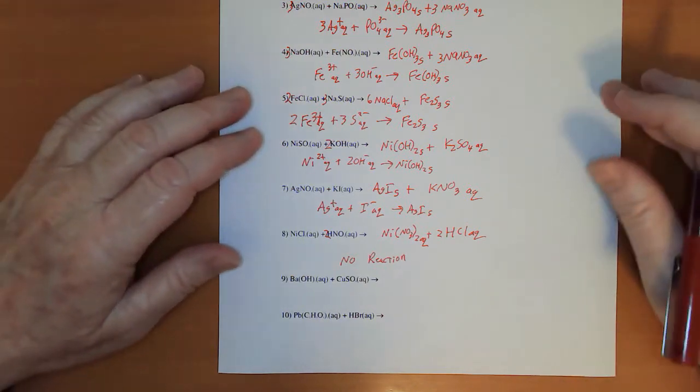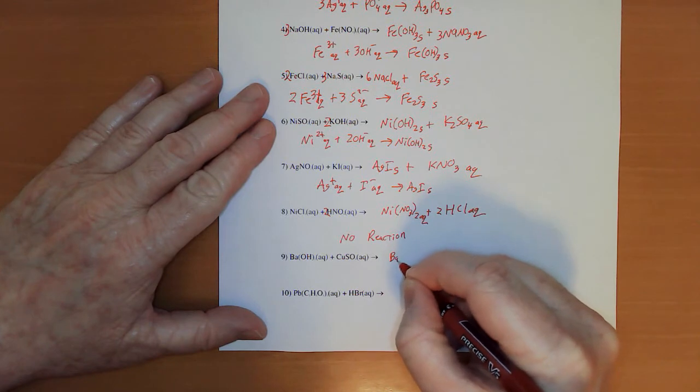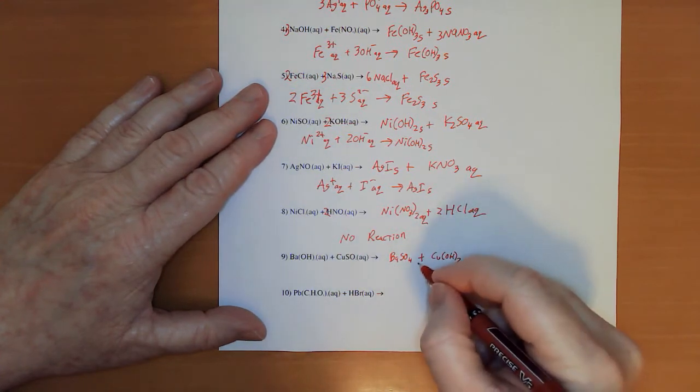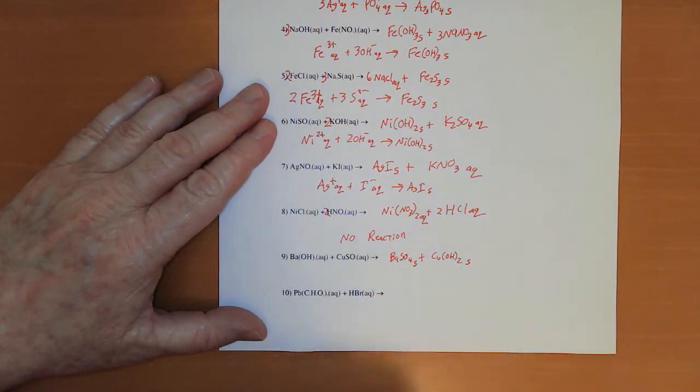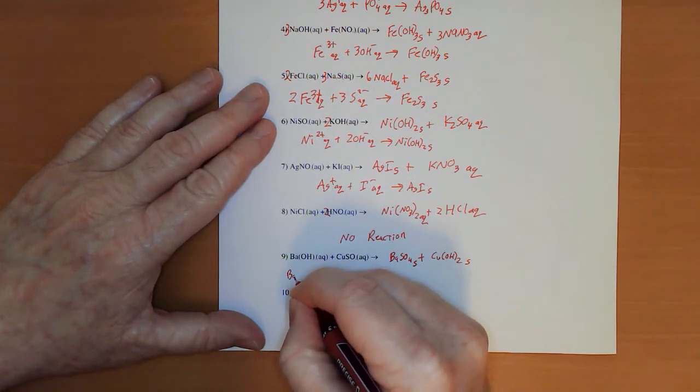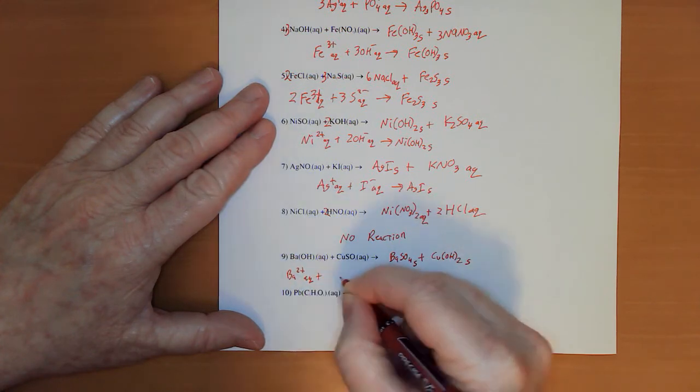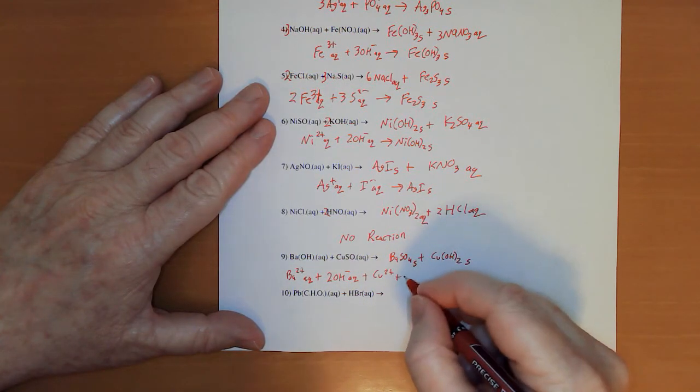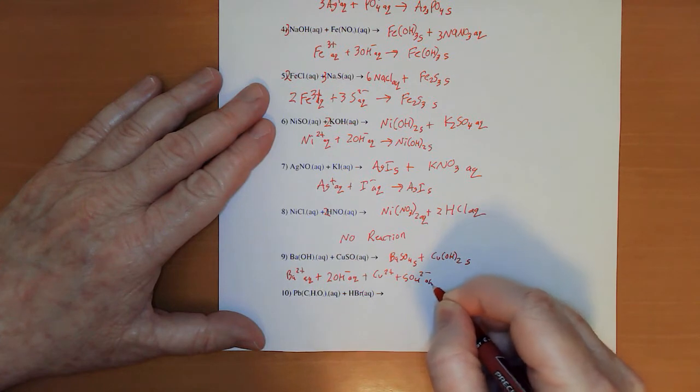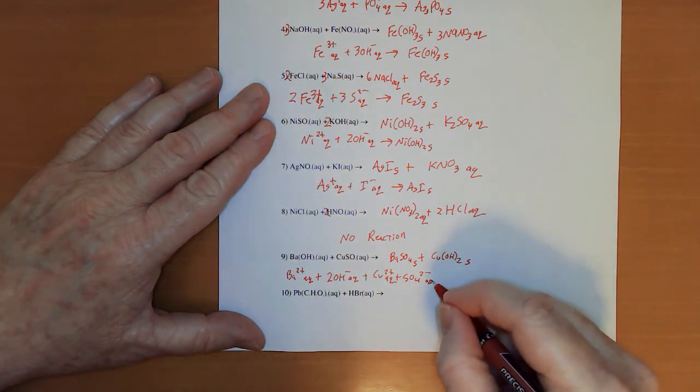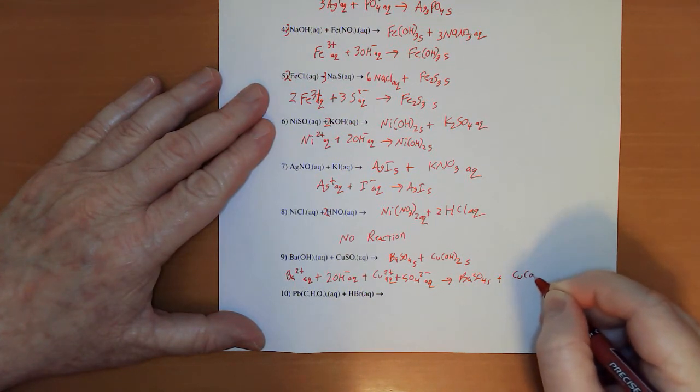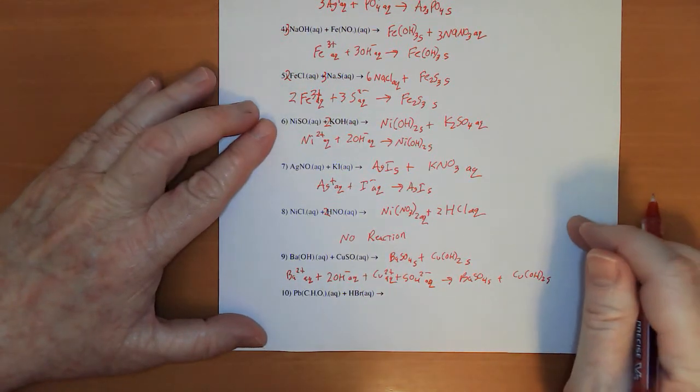On this next one, I recognize two precipitates form, a double precipitate. What a pain, huh? So the net ionic equation is kind of long.